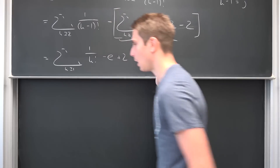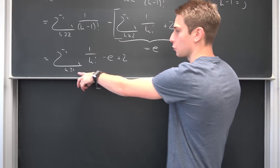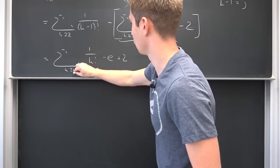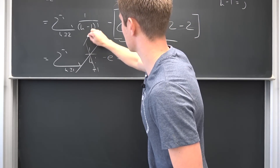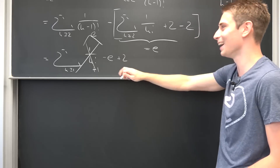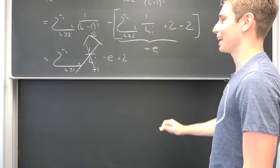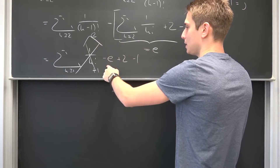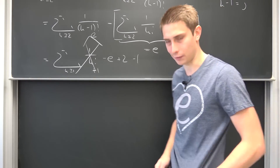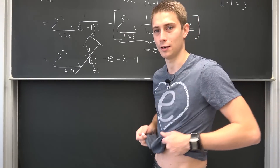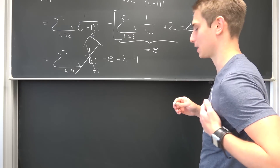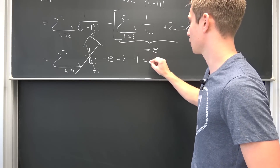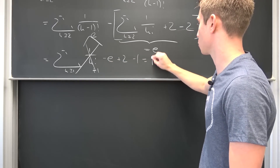We get a new summation with J greater or equal to 1 of 1 over J factorial, minus E plus 2. This thing is basically our boy E, just with the 0th term missing — the 0th term is 1 — so we add 1 to it. This whole thing makes E. We have E minus E plus 2 minus 1. E is going to cancel out — E is still there in our hearts, okay, in our hearts. So this gives us 0 plus 2 minus 1, which is 1.